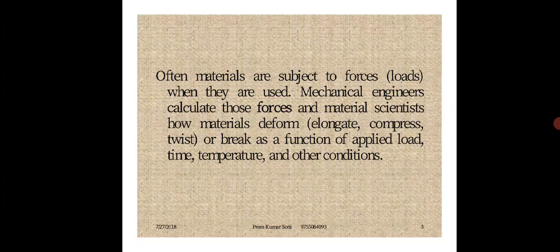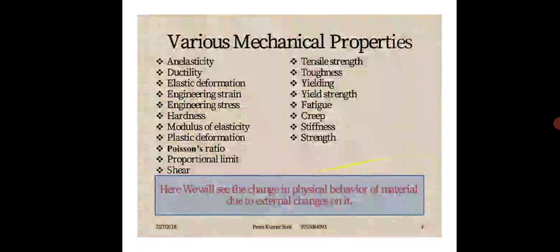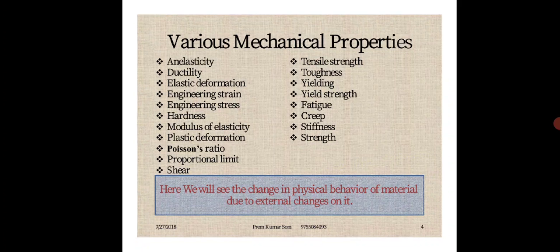Let us see the different mechanical properties of materials. We can classify them mainly into these categories: Anisotropy, Elasticity, Plasticity, Ductility, Malleability, Brittleness, Hardness, Toughness, Stiffness, Resilience, Creep, Endurance, Strength, Embossed Strength, and Fatigue.